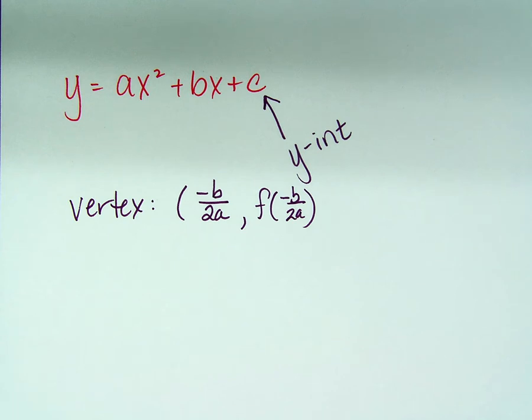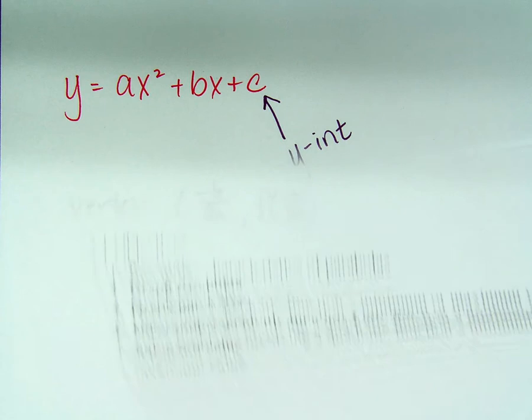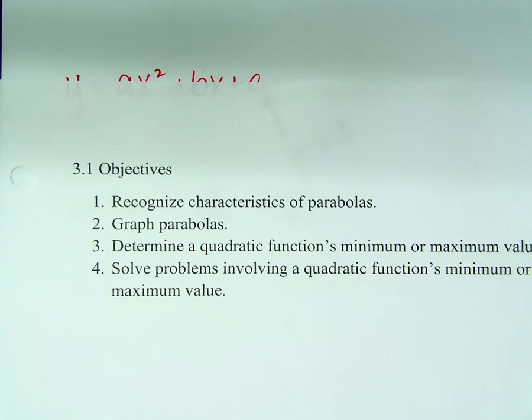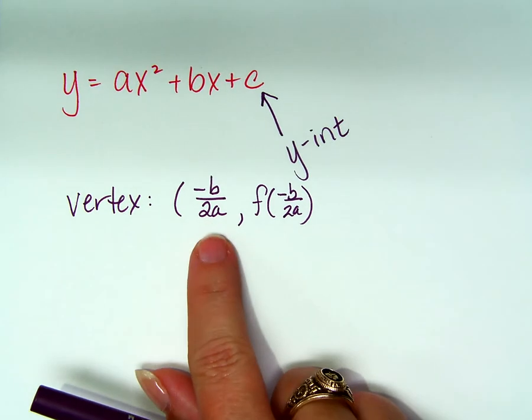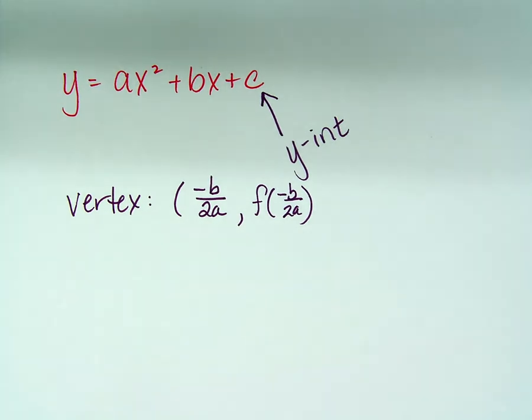So the last thing, the last objective that we have is to determine a quadratic function's minimum or maximum. Well, if you know the vertex is at -b/2a, doesn't that help you determine the minimum or maximum? How do you decide if it's a minimum or maximum?